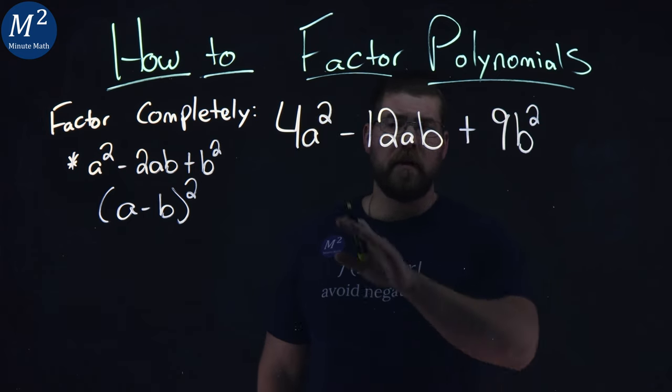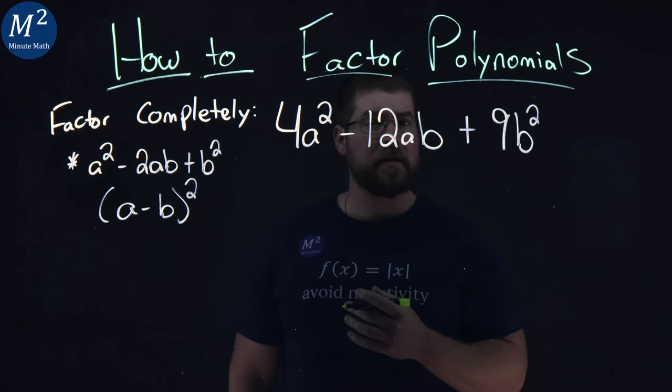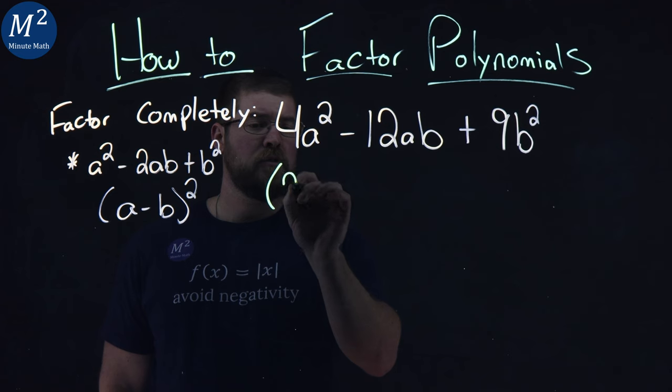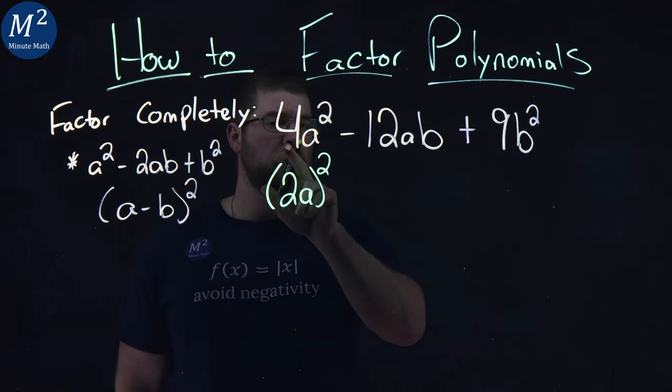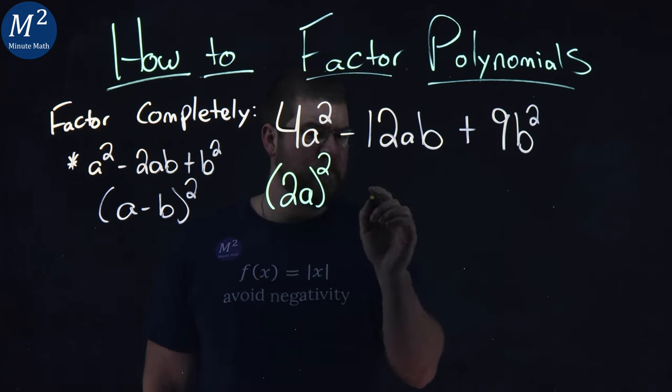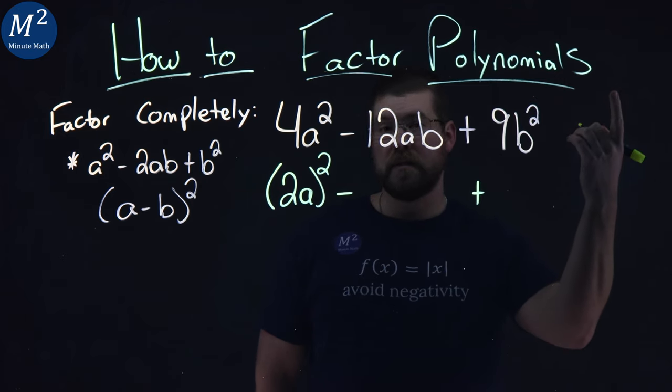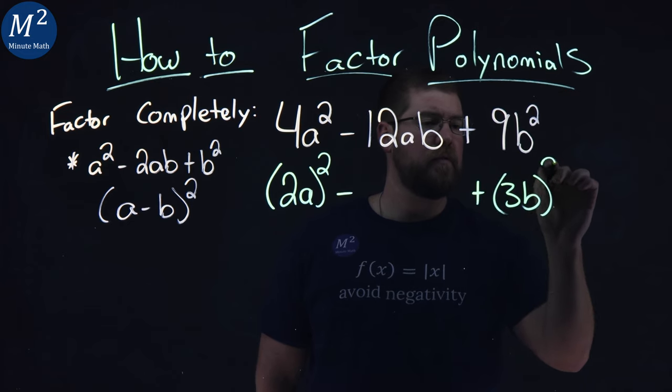One thing I do notice, though, is that the first term and the last term are really a perfect square. The first term we can rewrite as 2a all squared. Notice, 2 squared is 4, a squared is a squared. And the last part here, same thing. 9b² is the same thing as 3b all squared.